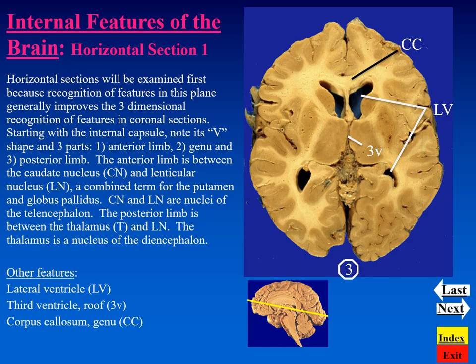Some white matter and gray matter features to point out: first, this V-shaped band of white matter, the internal capsule. This is an extremely important bundle of fibers because it transmits almost all of the ascending and descending information going to or from the cerebral cortex. It is composed of three parts: one is the anterior limb, two is known as the genu — the bend in the internal capsule — and three is the posterior limb.